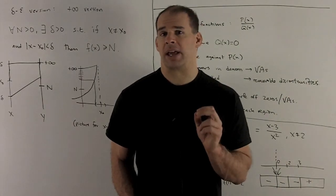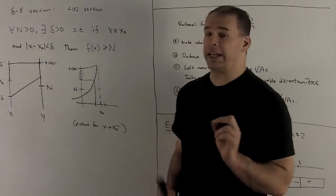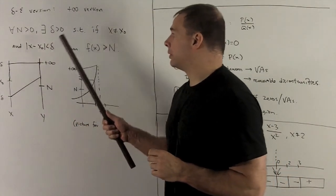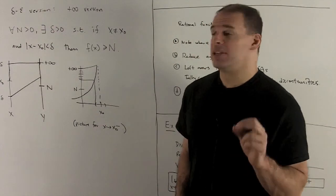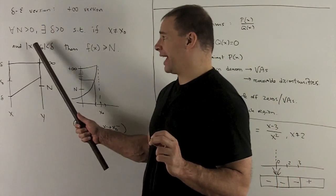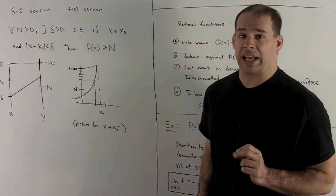If I want a delta epsilon type definition for a limit that goes off to say plus infinity, I'm going to have this. For all n bigger than 0, there exists a delta bigger than 0, such that if x is not equal to x0, and the distance between x and x0 is less than delta, then f of x has to be bigger than n.